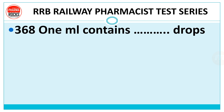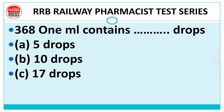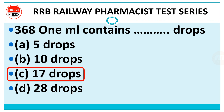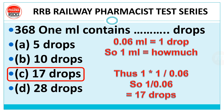Question 368: One ml contains how many drops? Options: 5, 10, 17, or 28 drops. Right answer is 17 drops. Calculation: 0.06 ml = 1 drop, so 1 ml = 1 ÷ 0.06 = approximately 17 drops. Right answer is Option C.